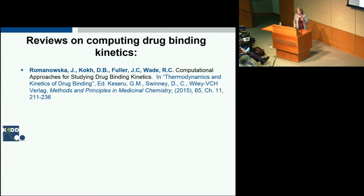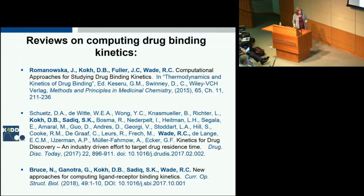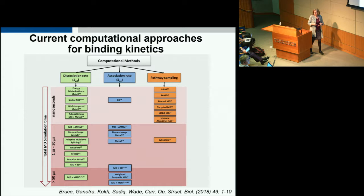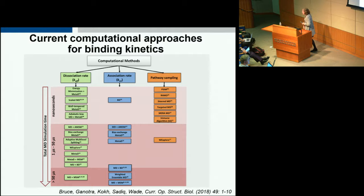More recently, we wrote another review capturing the huge flurry of activity with many different techniques for computing drug binding kinetics. We have a range of techniques for calculating dissociation rates, association rates, and pathway sampling, ranging from methods needing only a few nanoseconds up to very computationally expensive procedures. Many of these have been developed by people in the audience. Most often they're tested on one or a few cases, sometimes simple cases like benzamidine-trypsin binding. What has been lacking is access to large datasets to really develop and test the methods.